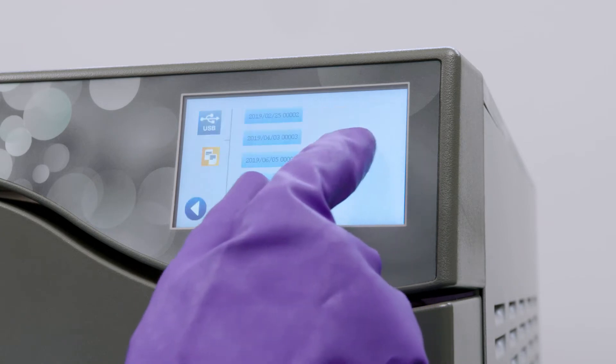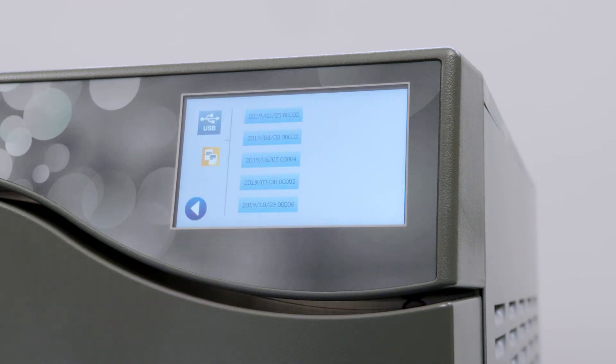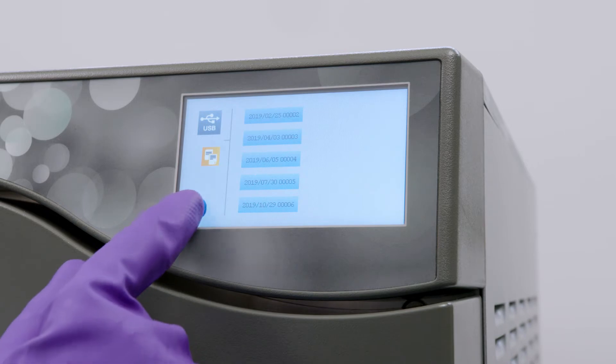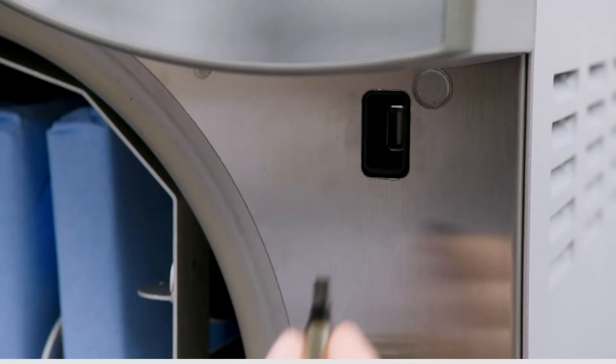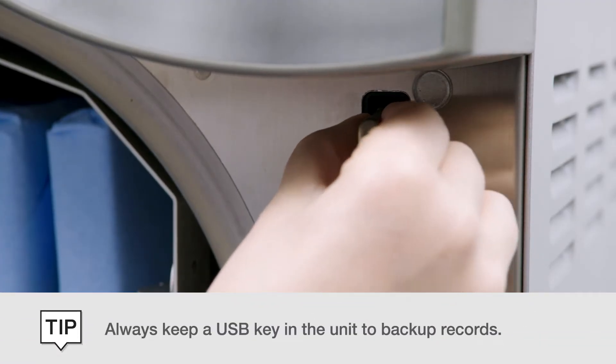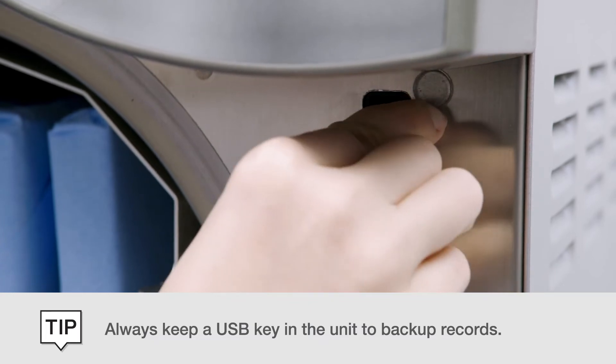When the USB icon is pressed, the display will show the last five completed cycles along with the last five incomplete cycles. When your unit is connected to the G4 network, all cycle data will be stored to the cloud. However, it is recommended to keep a USB key installed as a backup.